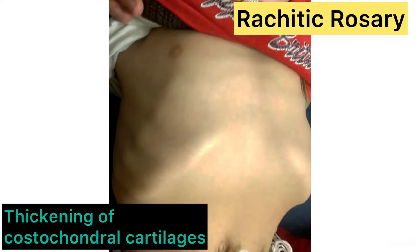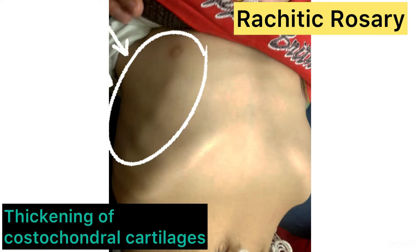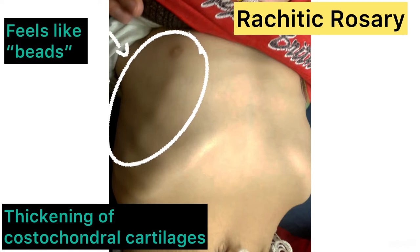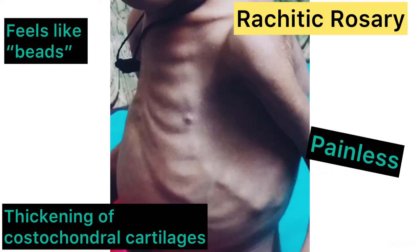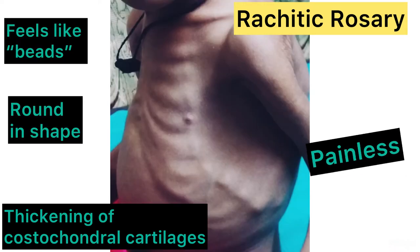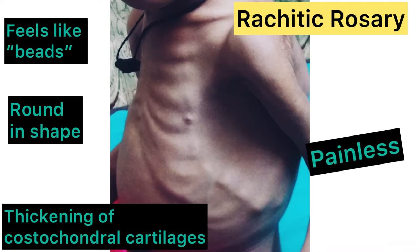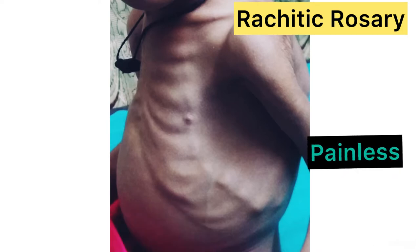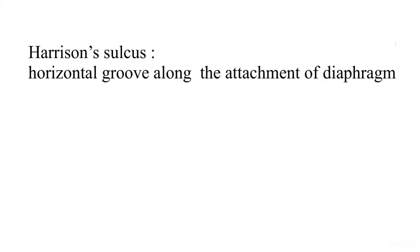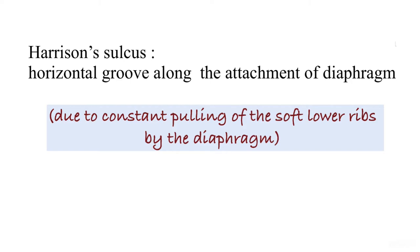Rachitic rosary is characterized by the feeling of a bead-like structure due to thickening of the costochondral cartilage, and it is usually painless as opposed to the scurvetic rosary. Harrison sulcus is a horizontal groove along the attachment of the diaphragm due to constant pulling of the soft ribs by the diaphragm.